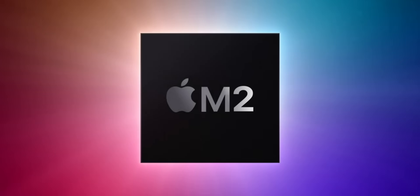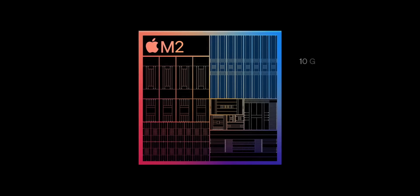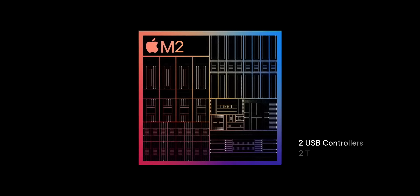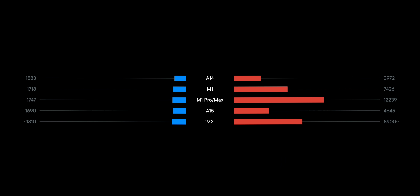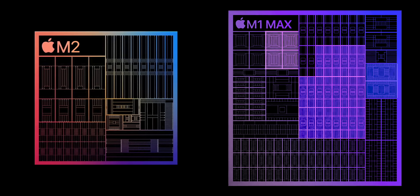If we assume past behavior predicts future behavior — that Apple continues with M2 what they did with M1 and A12X before it — we should see something close to four Avalanche P cores maybe at up to 3.4 GHz, four Blizzard E cores maybe at up to 2.2 GHz, up to 10 G14 GPU cores, a ProRes engine, extra system cache, but probably still up to 16 GB of memory at 70 GB/s bandwidth, and two USB and two Thunderbolt controllers. Compared to M1 Pro and Max, that means better single-core performance, but it still would not be competitive on multi-core — not even close — because it simply doesn't have enough cores. Probably not that third USB and Thunderbolt controller either, meaning probably fewer ports.